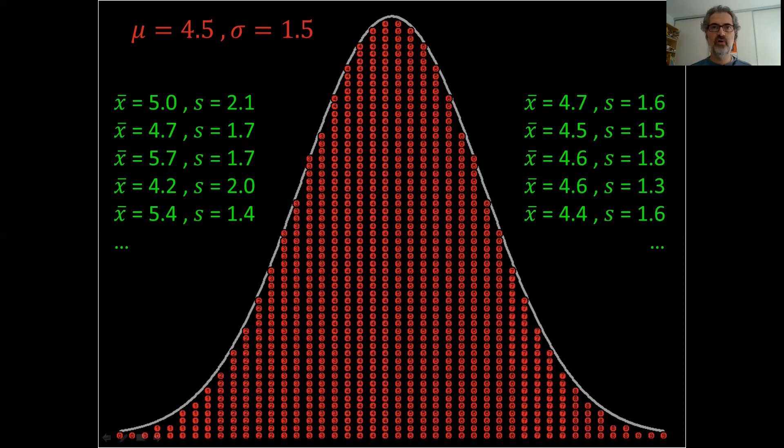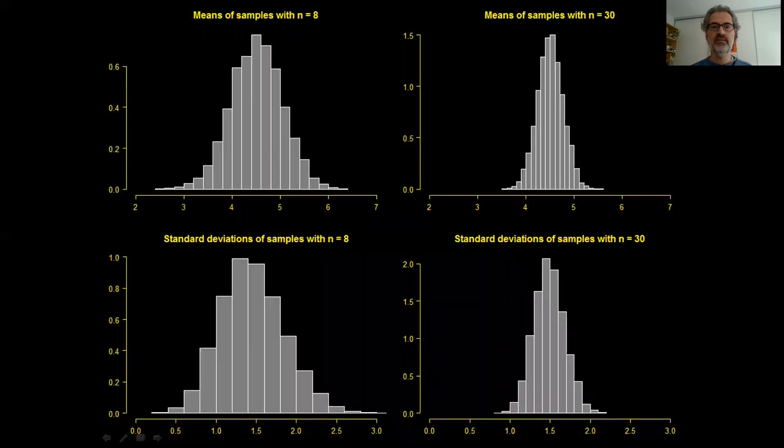If we draw lots and lots and lots of samples and each sample provides a mean and a standard deviation, then we end up with a bunch of means like these or these and a bunch of standard deviations like these and these. So these are just sets of numbers and we can plot their histogram as we could with any other set of numbers.